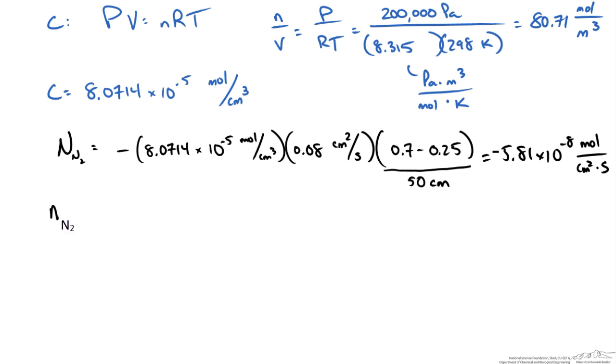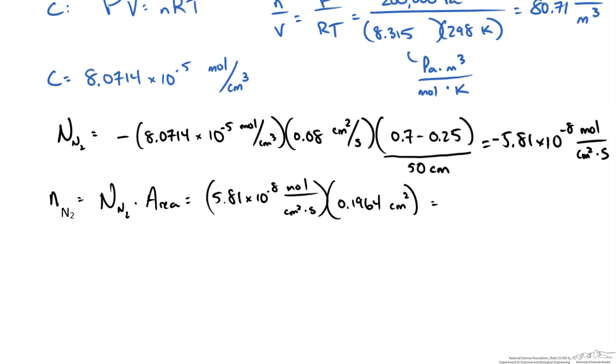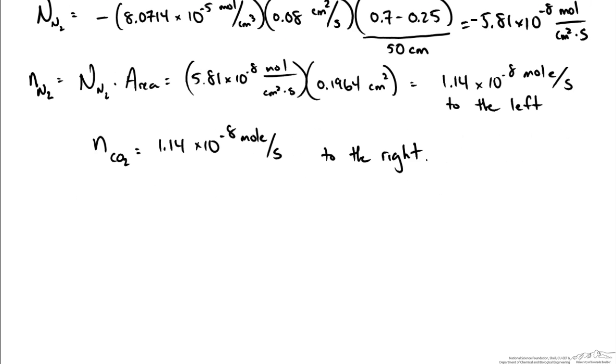The molar flow rate of N2 is just going to be our flux times our area. This gives me 1.14 times 10 to the minus 8 moles per second. So the molar flow rate of nitrogen is to the left. And therefore because of the equimolar counter diffusion we will also have 1.14 times 10 to the minus 8 moles per second for our molar flow rate of CO2. And this is to the right based on our schematic.